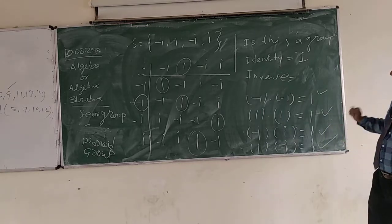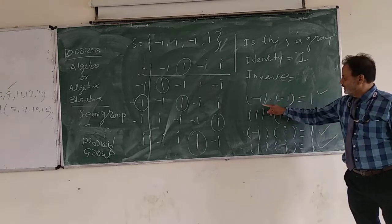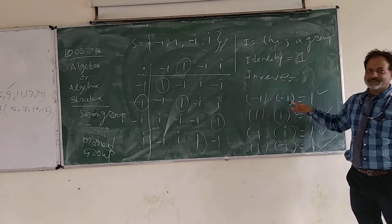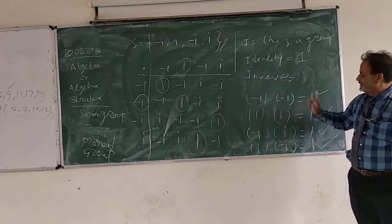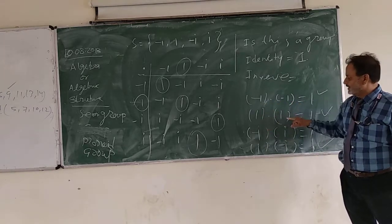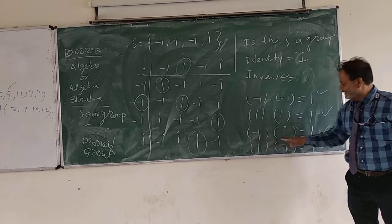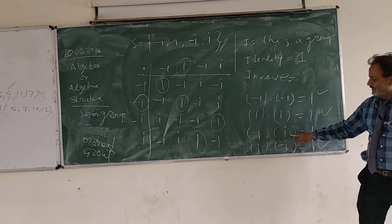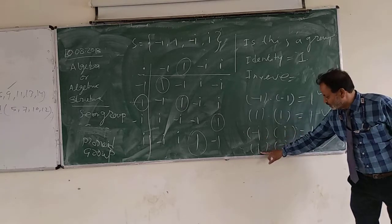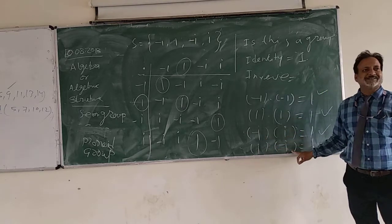The inverse of minus 1 is minus 1, inverse of 1 is 1, inverse of minus i is i, and inverse of i is minus i.